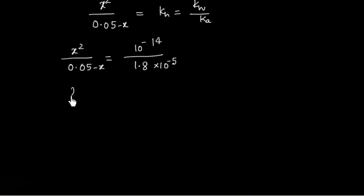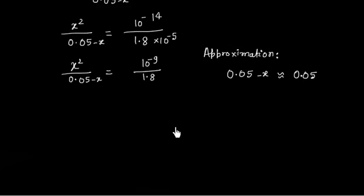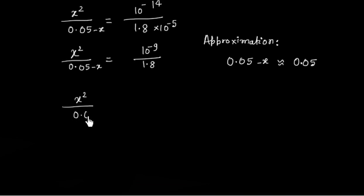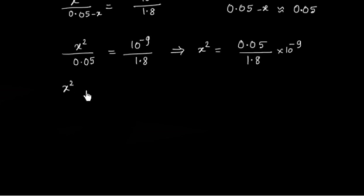So X² / (0.05 − X) = 10⁻¹⁴ / 1.8 × 10⁻⁵ ≈ 10⁻⁹ / 1.8. We now make the approximation that 0.05 − X ≈ 0.05, since X is very small. Using this approximation: X² / 0.05 = 10⁻⁹ / 1.8. Therefore X² = 0.05 / 1.8 × 10⁻⁹ = 5 × 10⁻¹¹ / 1.8.